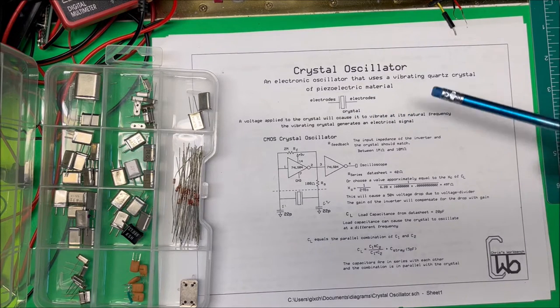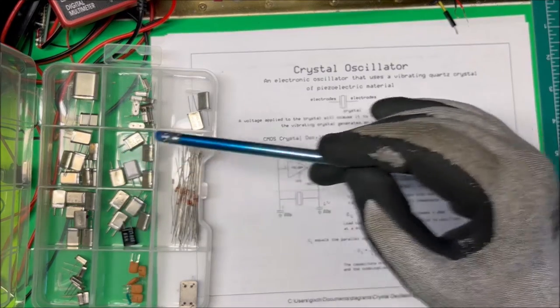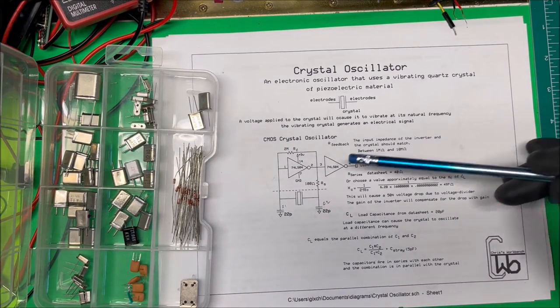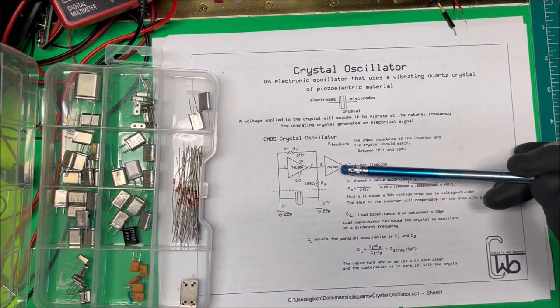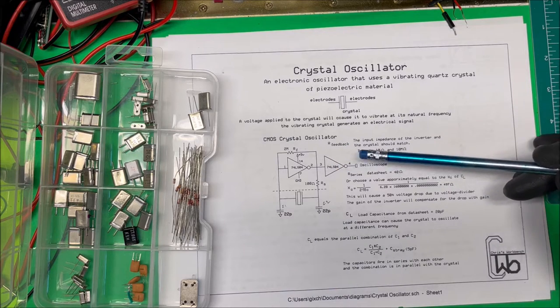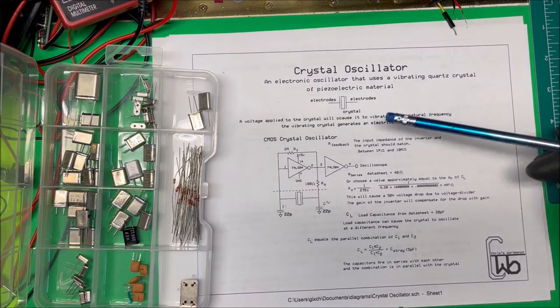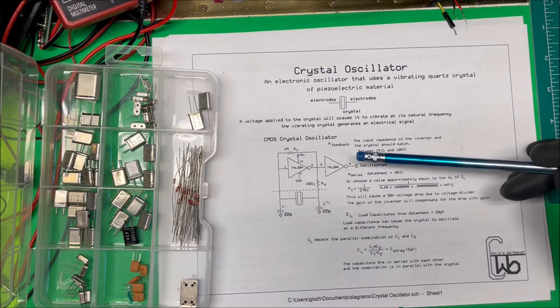So here they are, and we're going to test one of them. In order to do that, we're going to use a CMOS inverter. I'm using a 7404 inverter, and I'm connecting it like this.